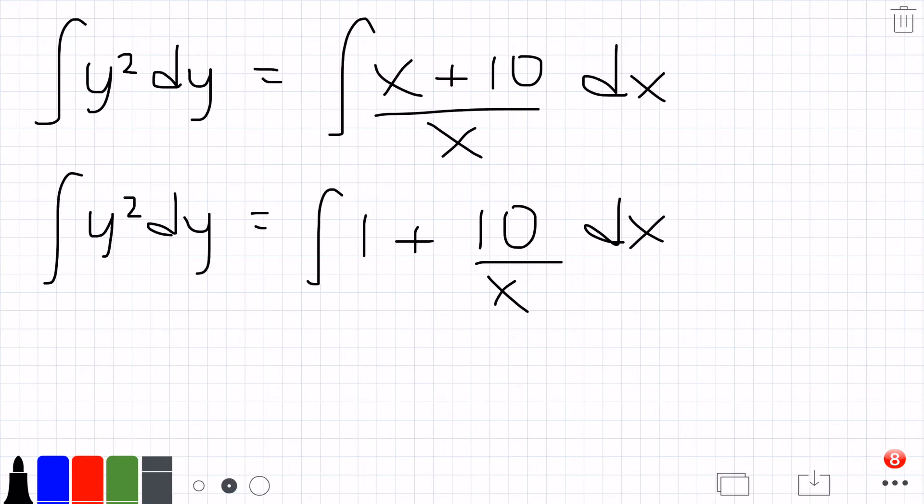If we integrate, we have (1/3)y³ = x + 10 ln|x| + C. There's also a constant over here.